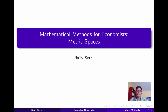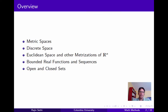In this segment, we'll introduce and discuss metric spaces. We'll begin with a definition of a metric space, then consider a bunch of examples including a discrete space, Euclidean space, other metrizations of Rn, the spaces of bounded real functions and bounded real sequences, and we'll finish up by considering open and closed sets in an arbitrary metric space.